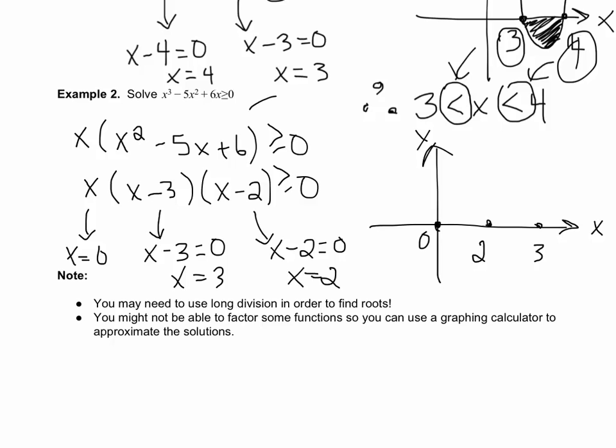We know we have an odd degree function with positive leading coefficient, meaning that our end behavior is going to be as x approaches positive infinity, y approaches positive infinity, and as x approaches negative infinity, y approaches negative infinity. We're going to join this together, and so our sketch would look like this.